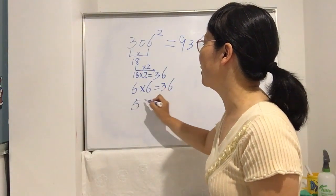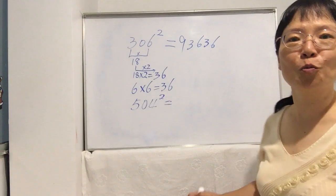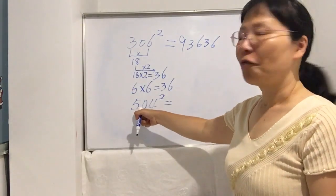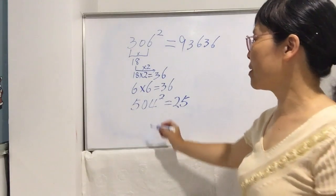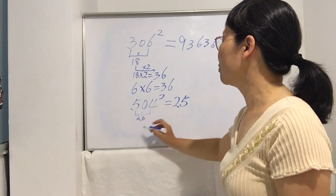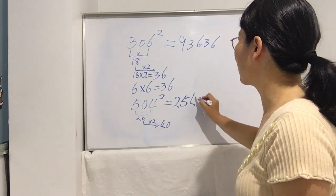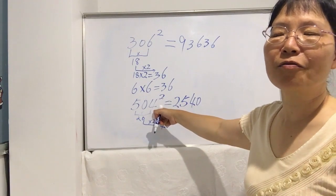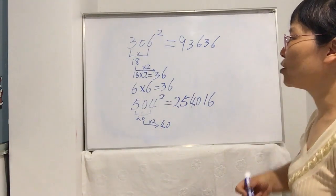Now practice one by yourself: 504 squared. Let's use the same technique. Five times five is twenty-five. Second step: five times four is twenty, then double it — twenty times two is forty. Write forty in the middle. Last step: four times four is sixteen. That's the answer.